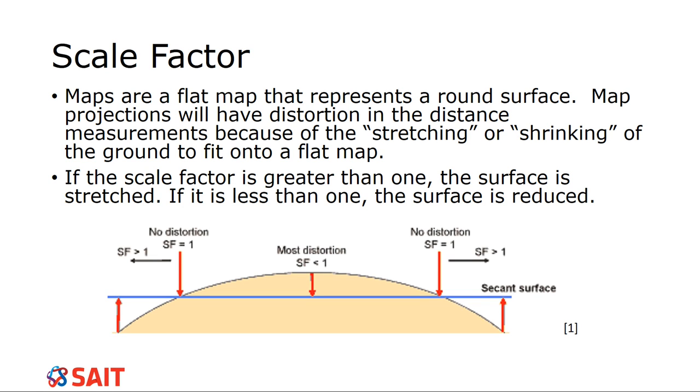Scale factor is what happens when we're trying to take this round surface and squish it onto a flat map. There's going to be distortion no matter what in many locations. In fact, the majority of your map is going to be distorted. If you try to take tin foil and flatten it, keeping it totally flat without any wrinkles around a tennis ball, it just doesn't happen. You just can't do that.